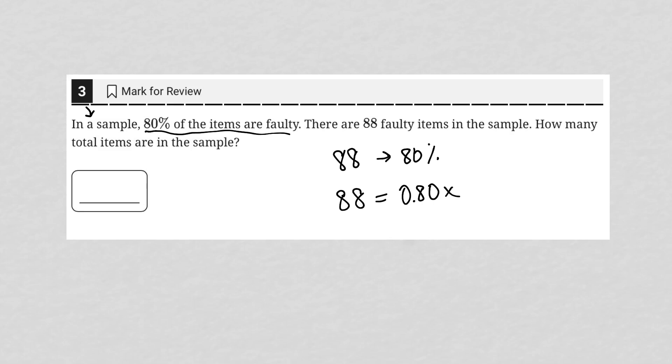So 0.80 times X. Now all I need to do is divide both sides by 0.80. Go to my calculator. The 0.80s cancel out on that side. And now I'm looking for what is 88 divided by 0.80, which is 110.